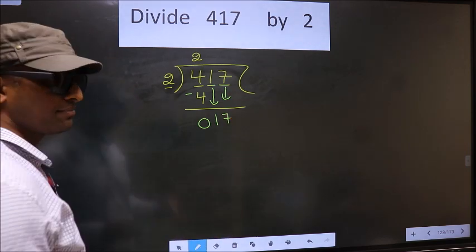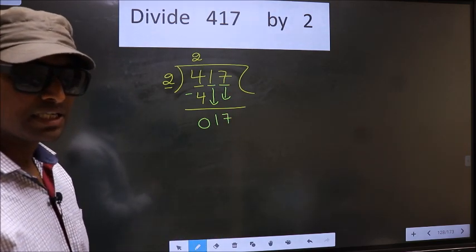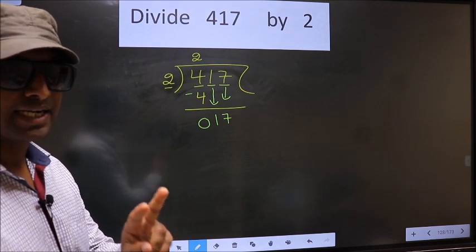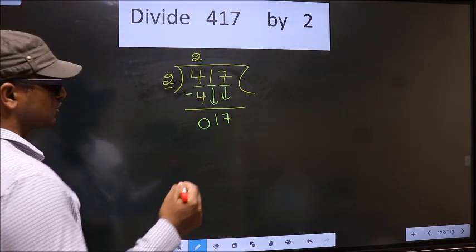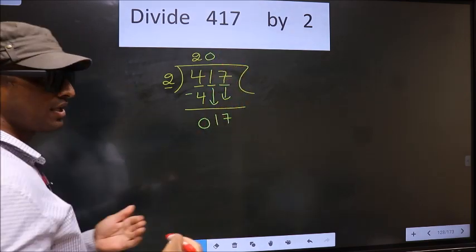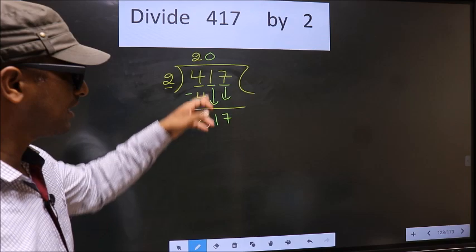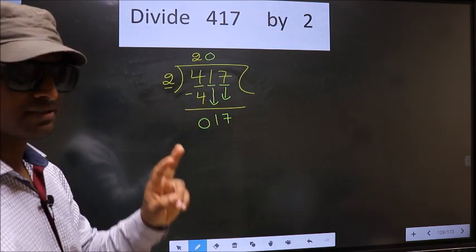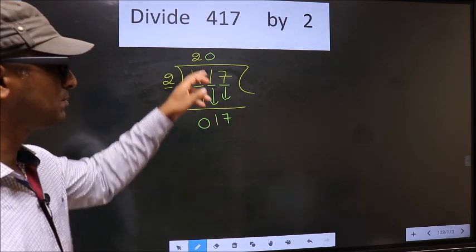Here you should remember this. Whenever you are bringing down 2 numbers at the same time, compulsory you should put 0 in the quotient. I repeat. Whenever you are bringing down 2 numbers, compulsory you should put 0.